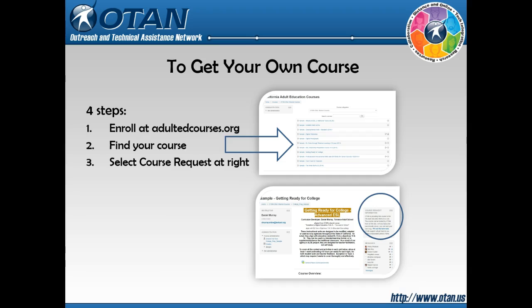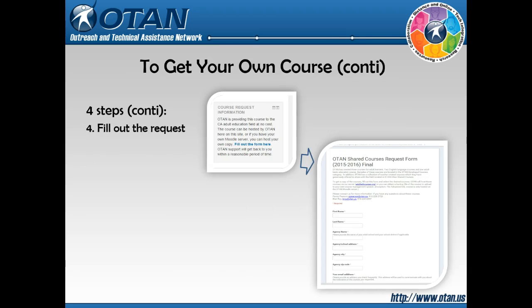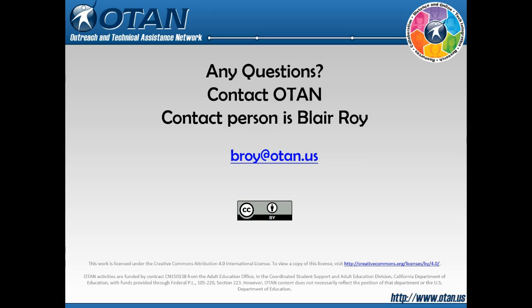Finally, how to get your own course. There are four steps. First, enroll at adultedcourses.org. Second, find the course you want to look at. Third, select the course request at the right. And four, fill out the request. It usually takes OTAN less than a week to fill your request. Any questions? Contact OTAN. The contact person is Blair Roy at broy@otan.us. Thank you, and happy moodling.